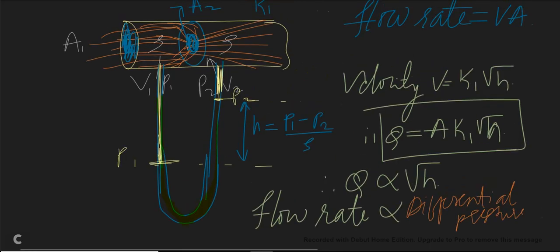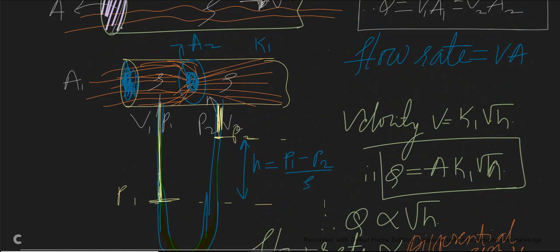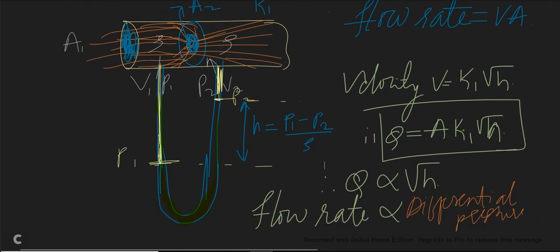This differential head can be used to measure flow rate: velocity equals K1 times the square root of H, where K1 is the restriction constant. The restriction constant K1 is derived from the ratio A1/A2, where A1 is the cross-sectional area of the pipe and A2 is the cross-sectional area of the orifice plate — A2 being smaller than A1. Substituting velocity into the flow rate formula, flow rate equals A times K1 times H. Therefore, flow rate is directly proportional to H, which means flow rate is directly proportional to the differential pressure.